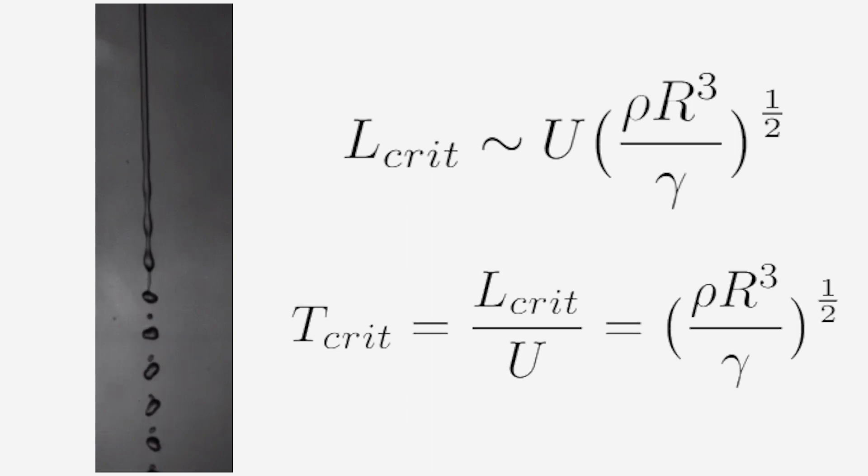The instability is primarily defined by two factors: the critical length L-critical and the growth rate of the perturbations. The critical length tells us how long the stream will last before decomposing into droplets, which can also be described as the critical time by dividing this by the jet speed.